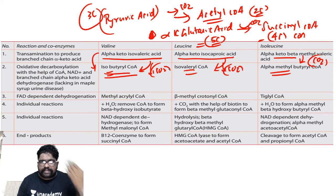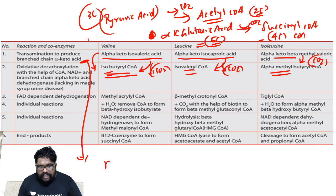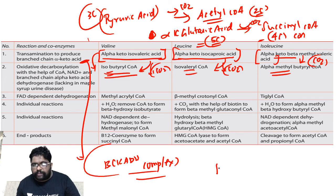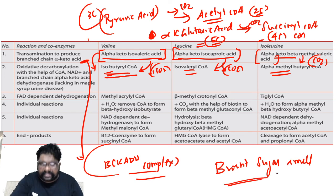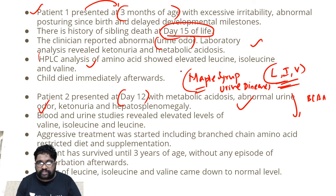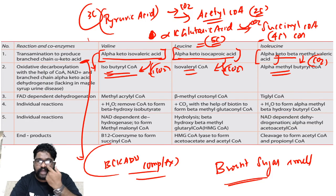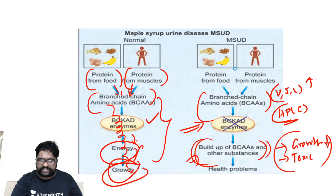The most important enzyme complex here — just like PDH complex or alpha-KGDH complex — is branched-chain ketoacid dehydrogenase complex (BCKADH). When deficient, it causes accumulation of alpha-keto isovaleric acid, alpha-keto isocaproic acid, and alpha-keto beta-methylvaleric acid in respective amino acid metabolism, giving you the burnt sugar smell referred to as maple syrup urine disease. The keto acids come out in the urine, which is why you see ketonuria.